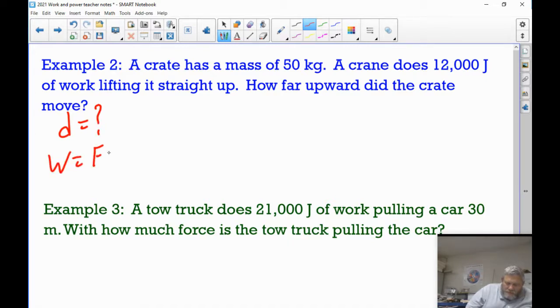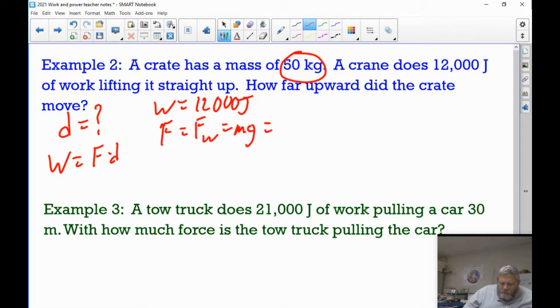We know that work equals F times D. We know the work. There's 12,000 joules. But what's the force? You're given the mass. So if the crane is going to lift up the crate, it's going to have to pull with a force of at least equal to its weight. So the force here is going to equal to FW, which is M times G. So it's going to be 50 times 9.8.